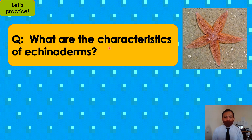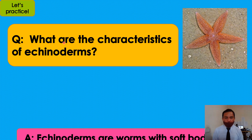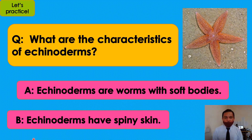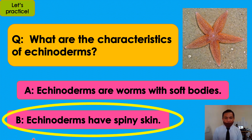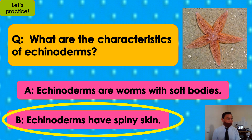Look at the picture. What are the characteristics of echinoderms? What is your answer: A or B? I will give you three counts: one, two, three. The answer is B — echinoderms have spiny skin. Very good!